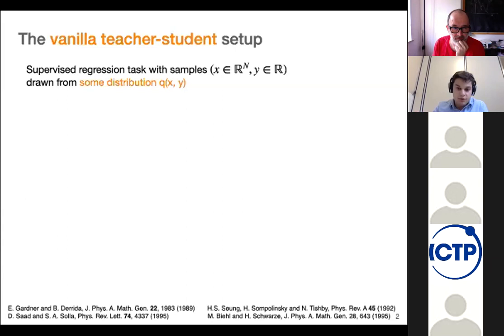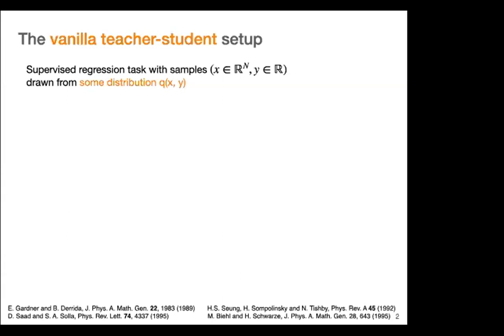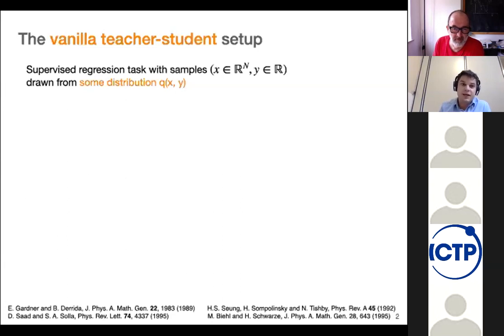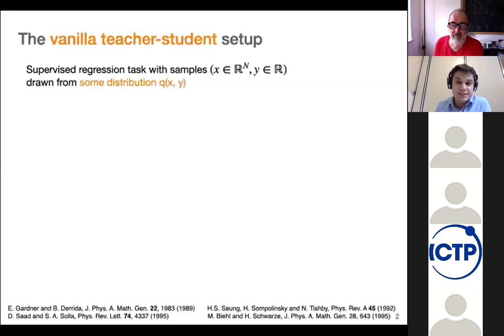We took a complementary view where we said: let's sacrifice some of that generality, but let's put some structure into this data distribution. Let's assume some general model for data that has some distinctive features, and then see how these features affect learning. The classical way of modeling data for learning is of course the classic teacher-student setup that emanated from the statistical physics of disordered systems, sometime in the eighties.